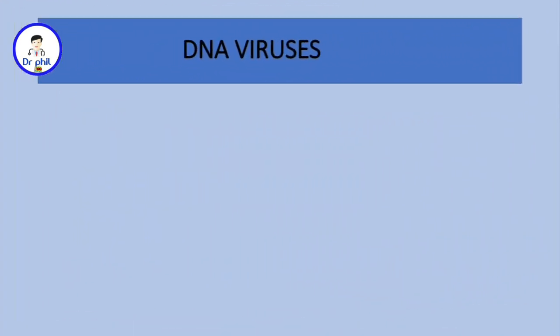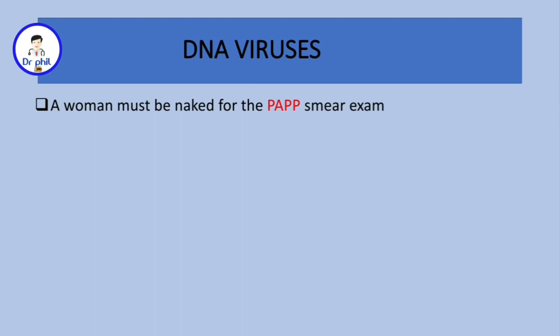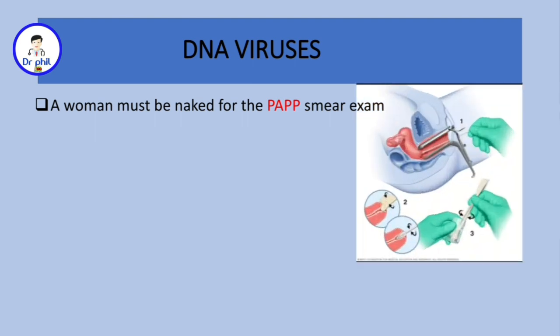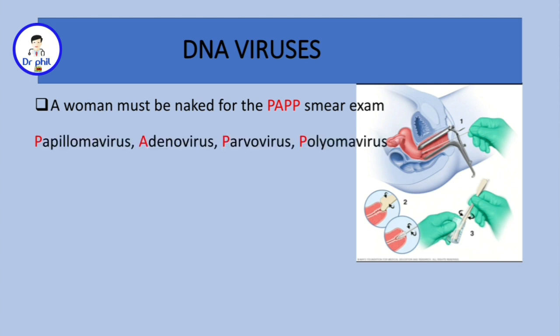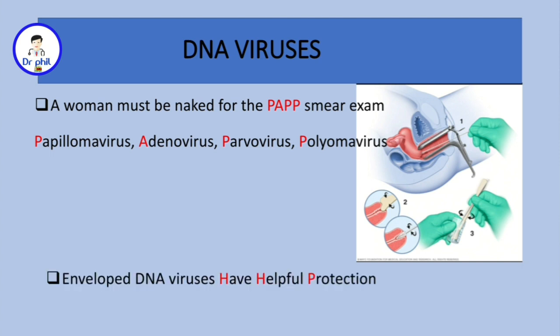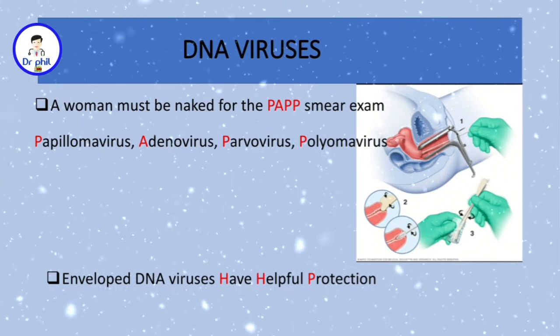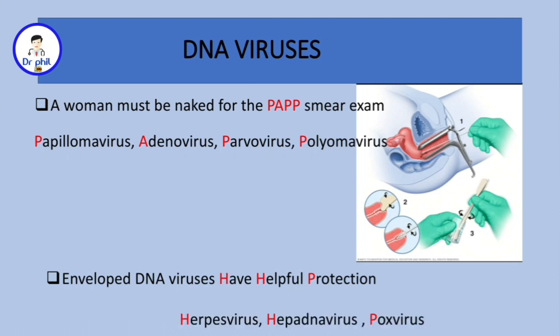How to remember all these features? I have a mnemonic for you. A woman must be naked for the pap smear test — the pap test is a test for cervical cancer in women, as you can see here. "Pap" will help you remember papilloma virus, adenovirus, parvovirus, and polyomavirus — these viruses are naked. But you should also remember that enveloped DNA viruses have helpful protection, especially when it's snowing. This will help you remember herpesvirus, hepadnavirus, and pox virus.